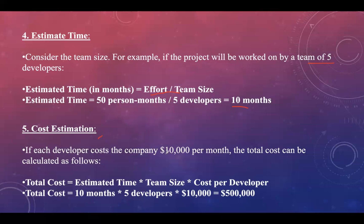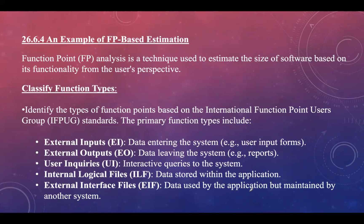Step five is cost estimation. If each developer costs the company $10,000 per month, the total cost is calculated by multiplying estimated time by team size by cost per developer. Estimated time is 10 months, team size is 5, and cost per developer is $10,000, giving a total cost of $500,000.